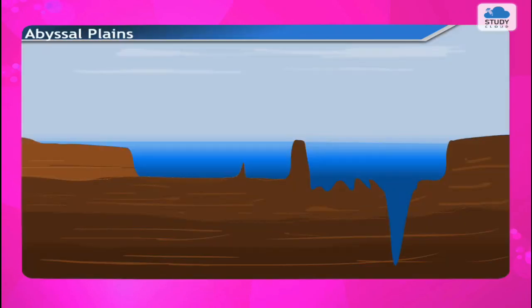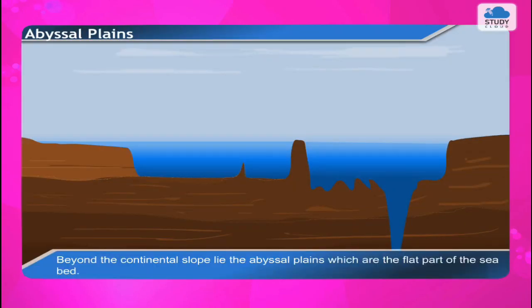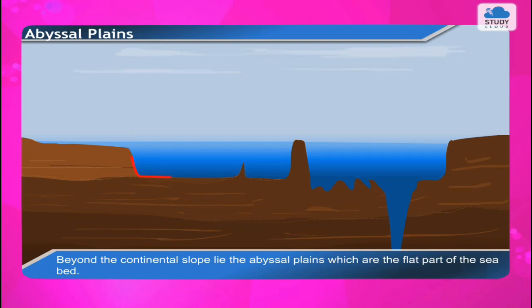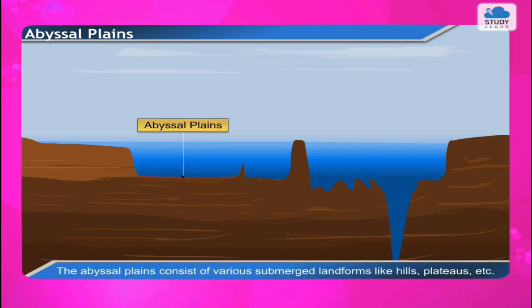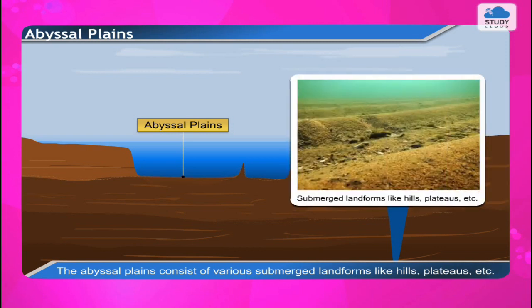Beyond the continental slope lie the abyssal plains, which are the flat part of the seabed. The abyssal plains consist of various submerged landforms like hills, plateaus, etc.